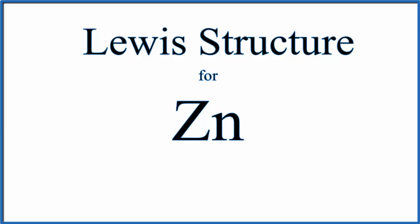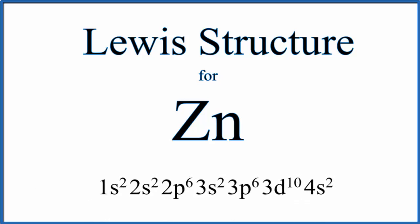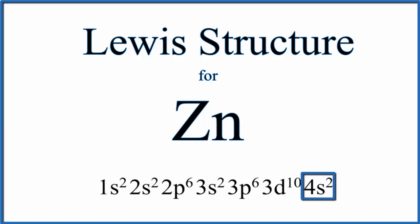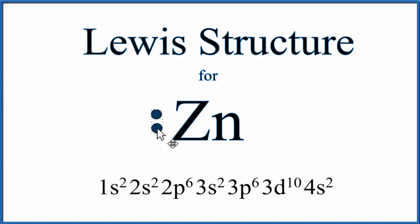We can do that by looking at the electron configuration. The configuration for zinc shows that the highest energy level is the fourth energy level, and the only thing in that level is 4s². That means zinc has two valence electrons, and we write two valence electrons next to the element symbol Zn.